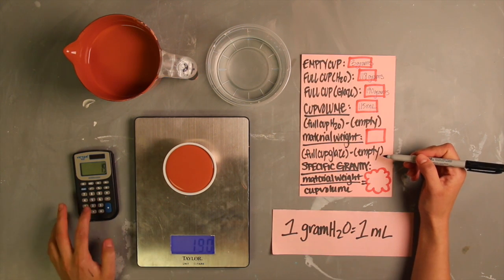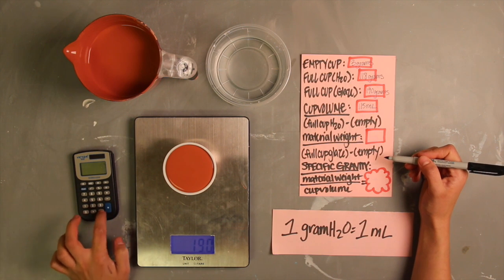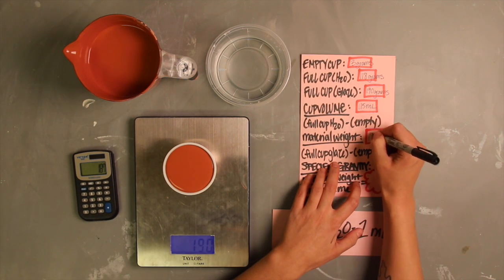Now to find the pure weight of your glaze, subtract the weight of the cup from the measurement you noted. Mine ends up about 187 grams.